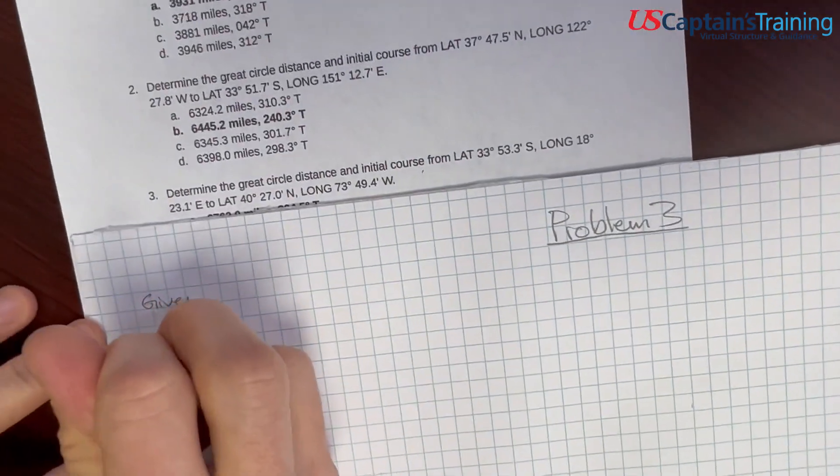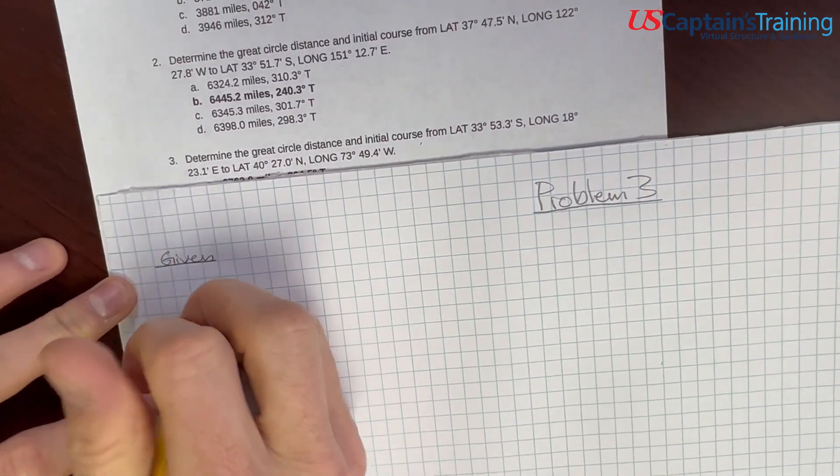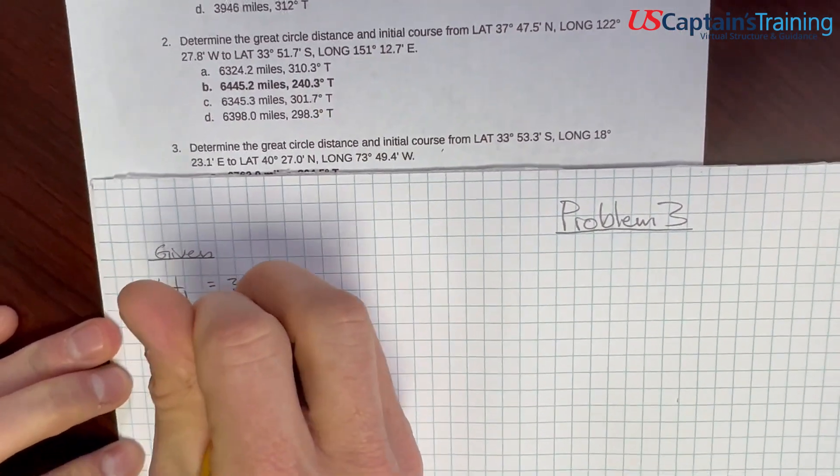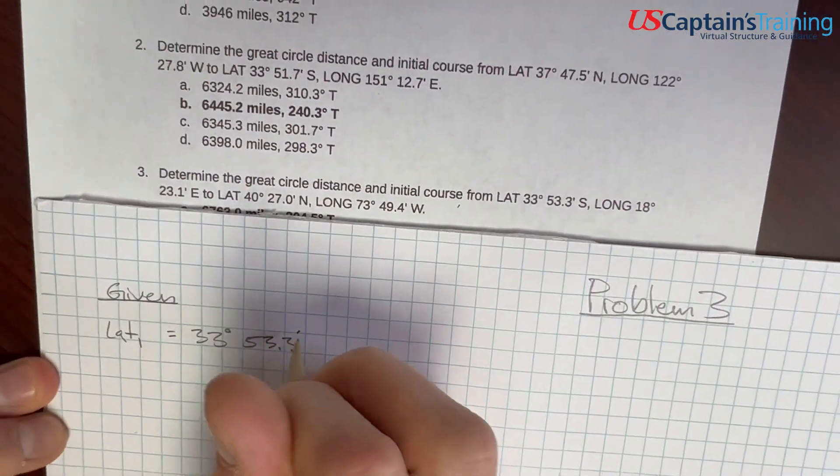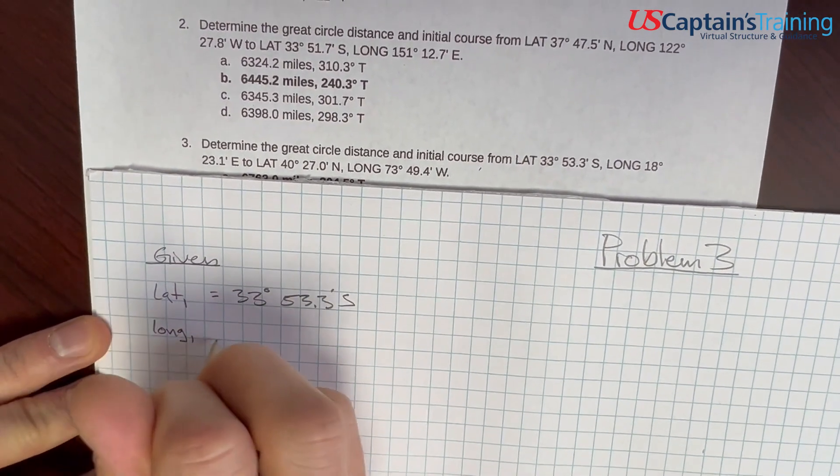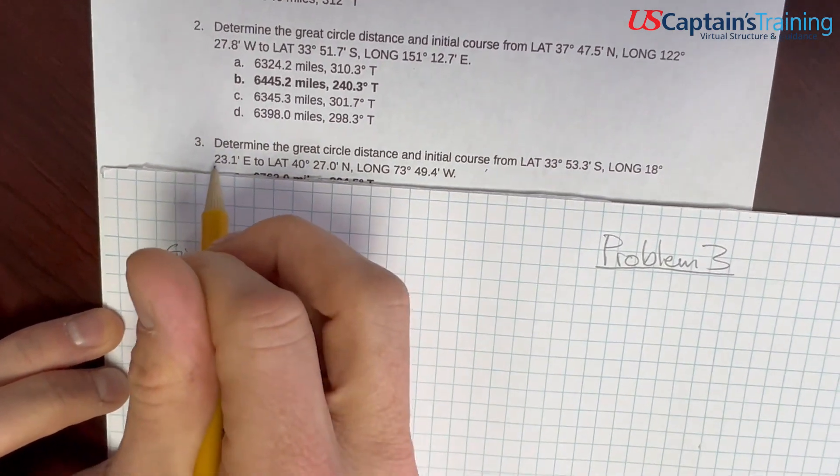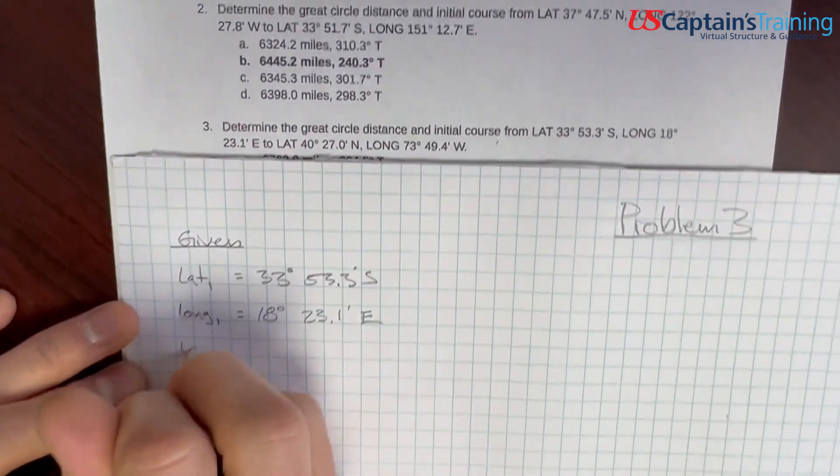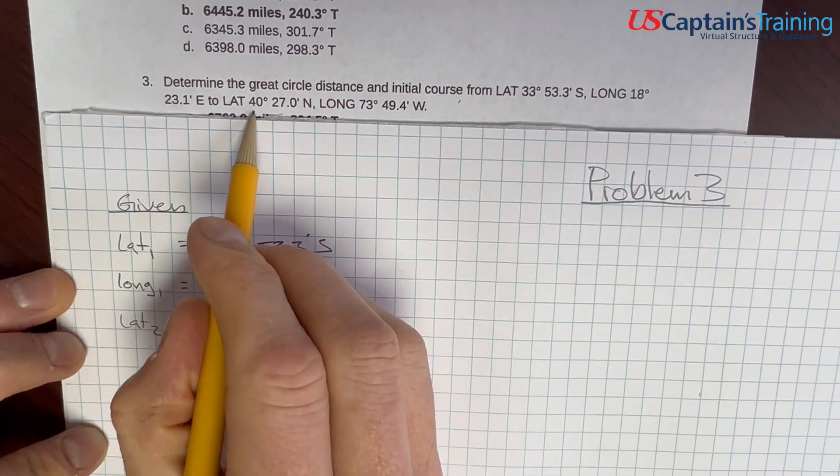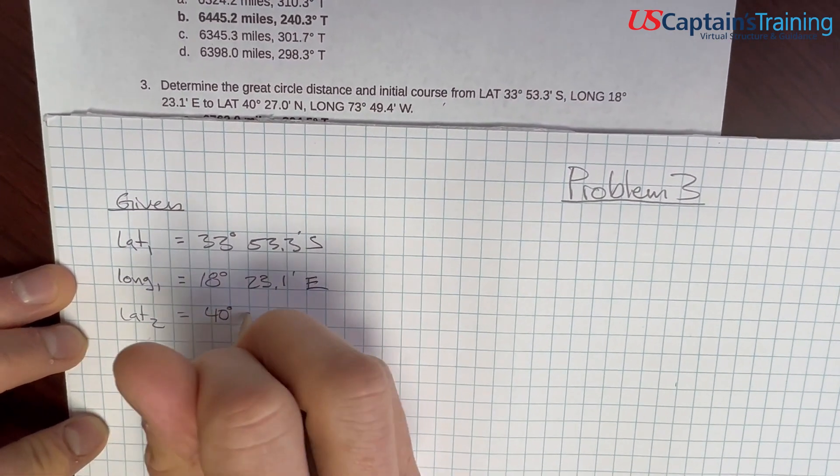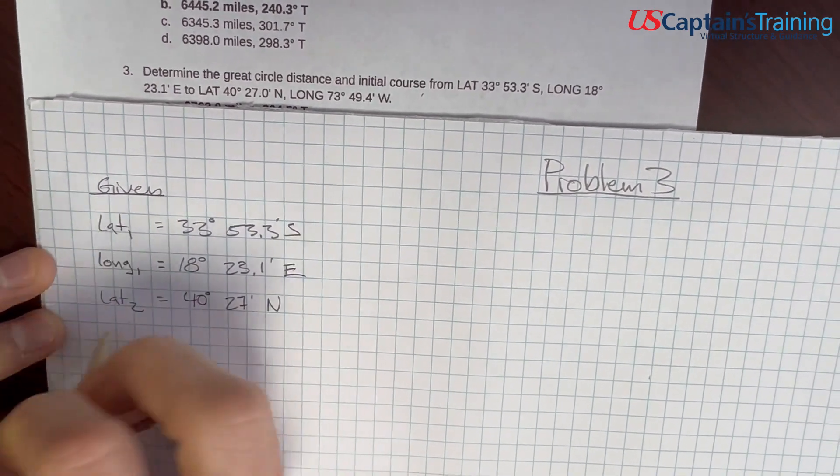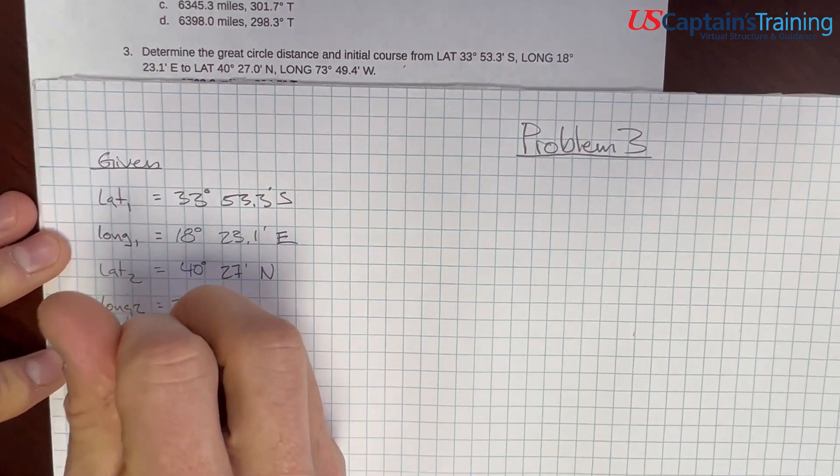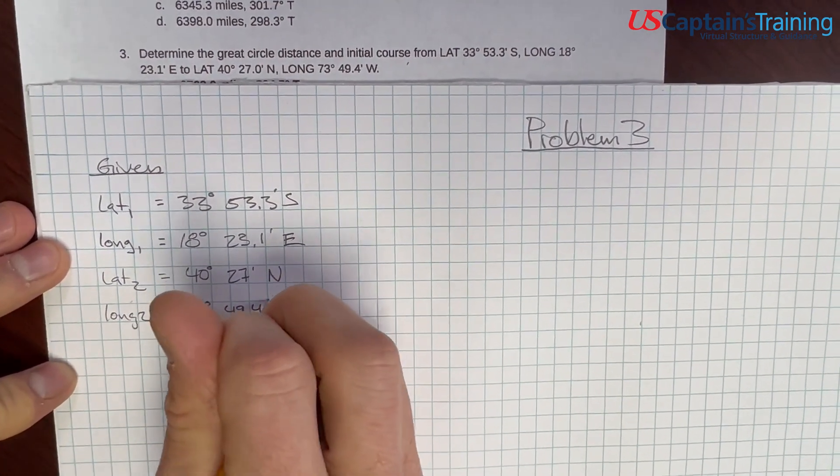We are taking our time here because there are a lot of numbers and it's easy to get them wrong. First thing, we are given two positions in latitude and longitude. We're going to record these. Lat 1 equals 33 degrees 53.3 minutes south. Longitude 1 equals 18 degrees 23.1 minutes east. Lat 2 equals 40 degrees 27 minutes north. And Long 2 equals 73 degrees 49.4 minutes west.